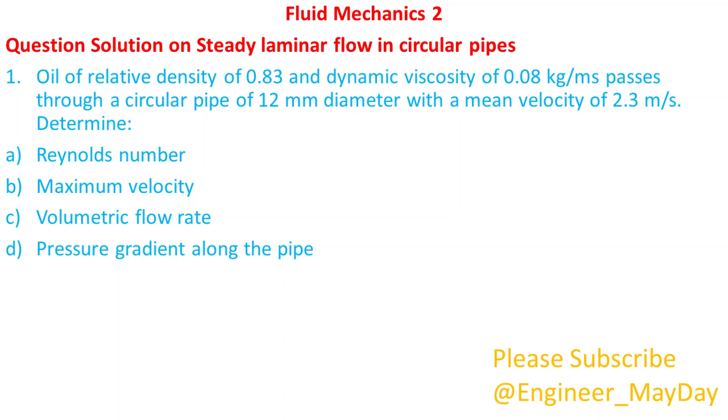Oil of relative density of 0.83 and dynamic viscosity of 0.08 kilograms per meter second passes through a circular pipe of 12 millimeters diameter with a mean velocity of 2.3 meters per second. Determine: